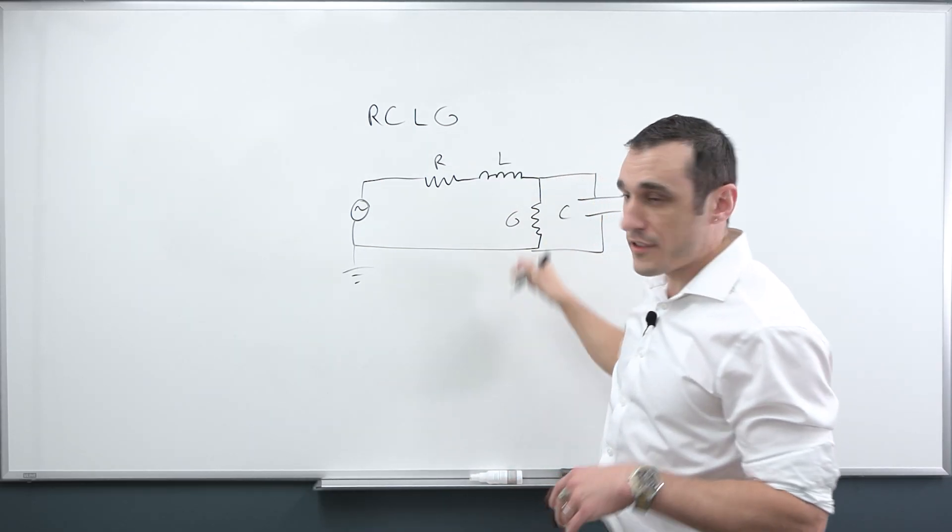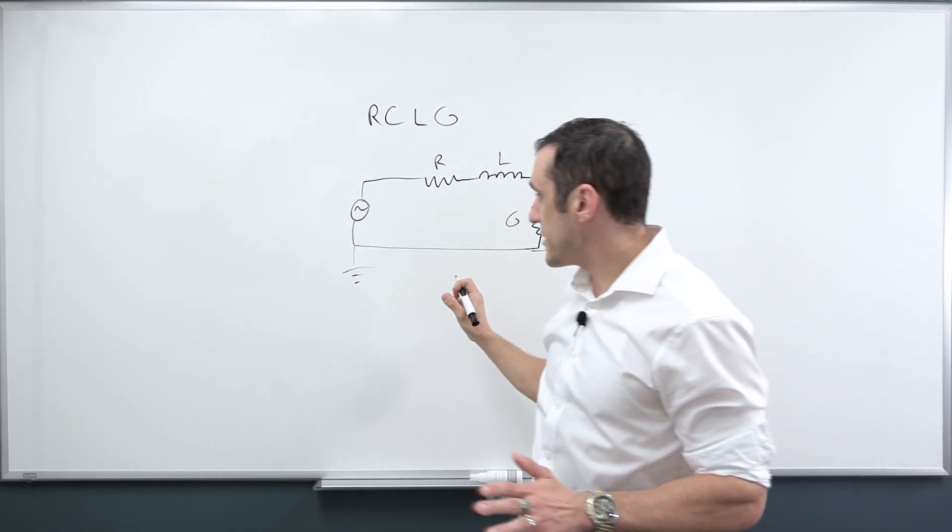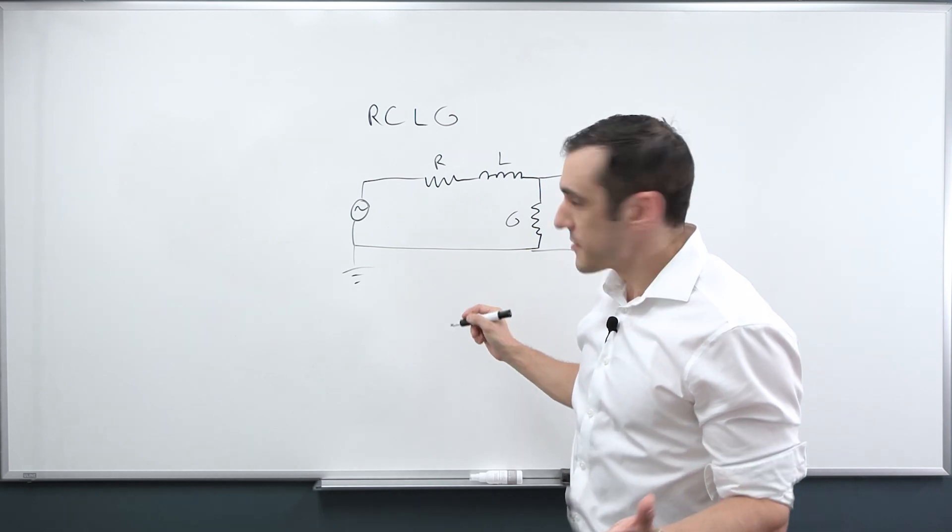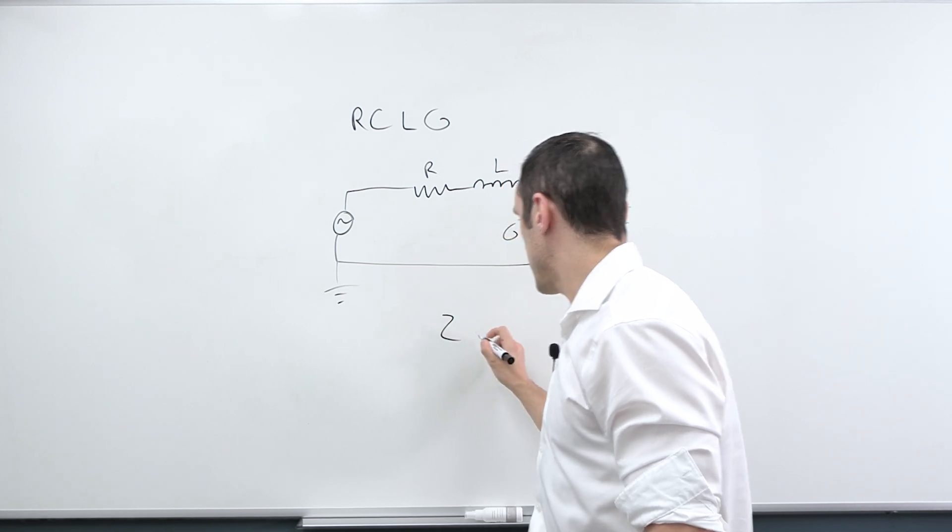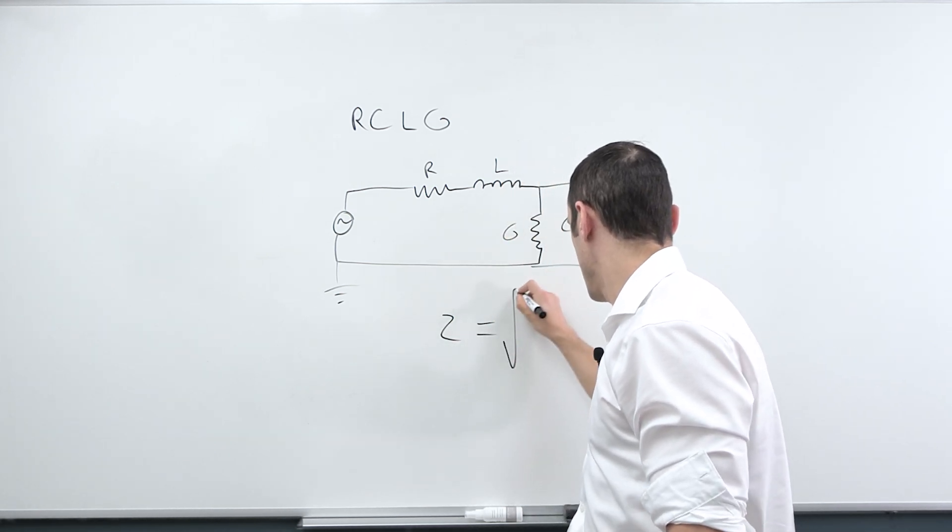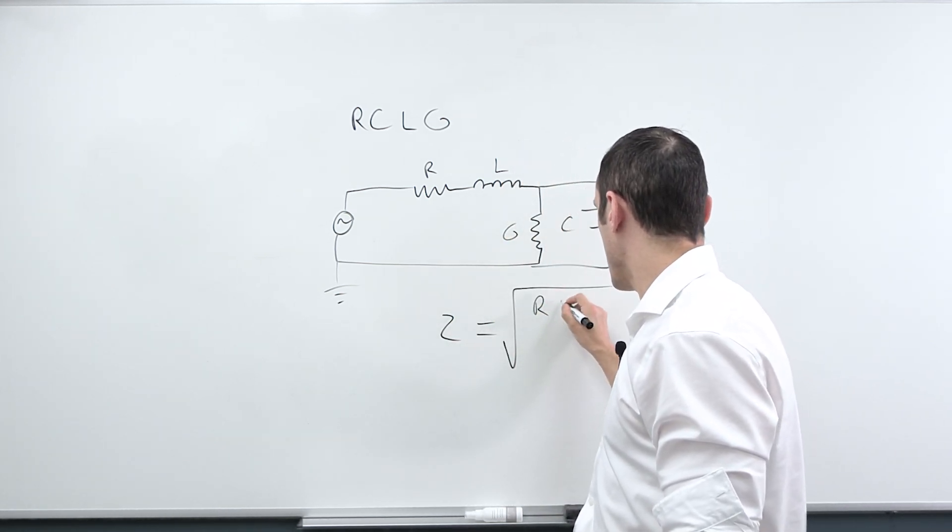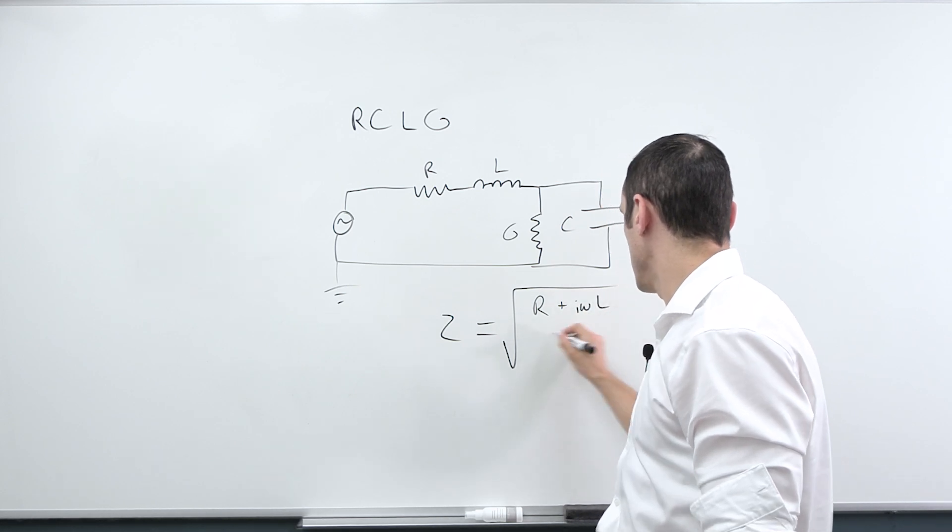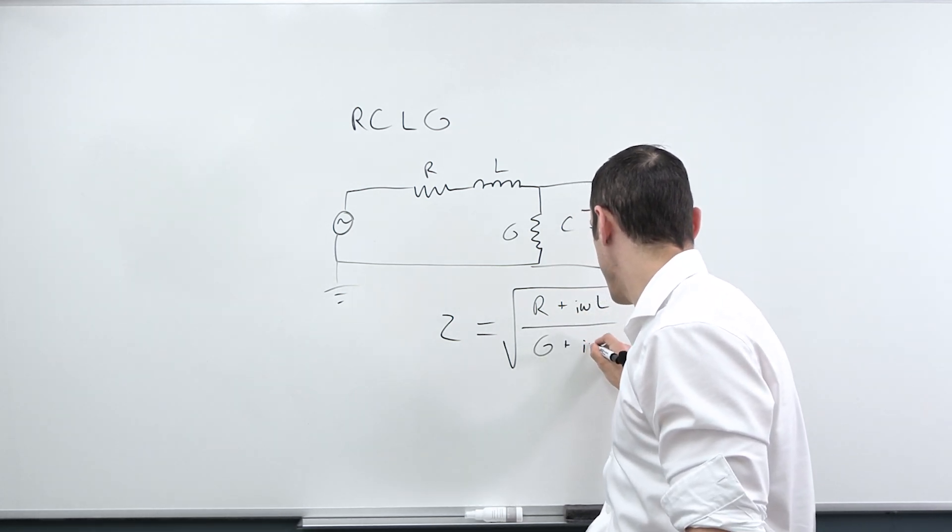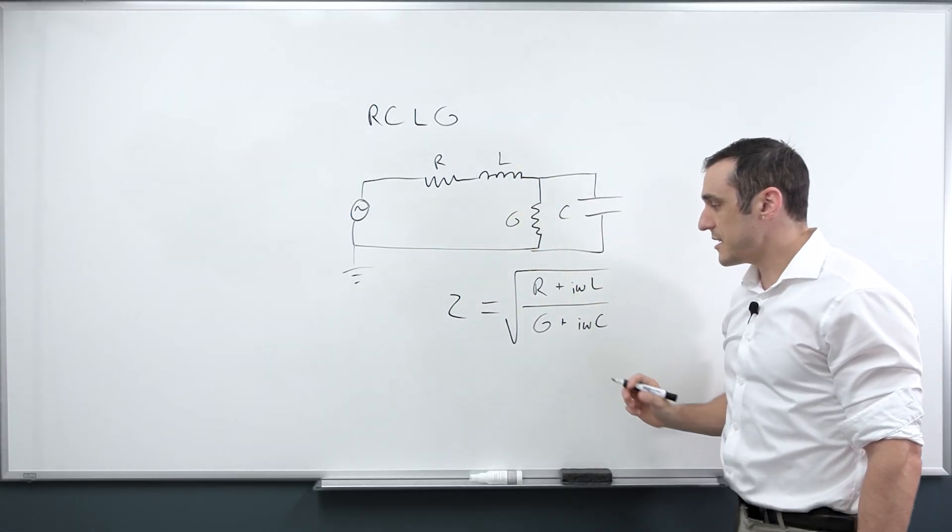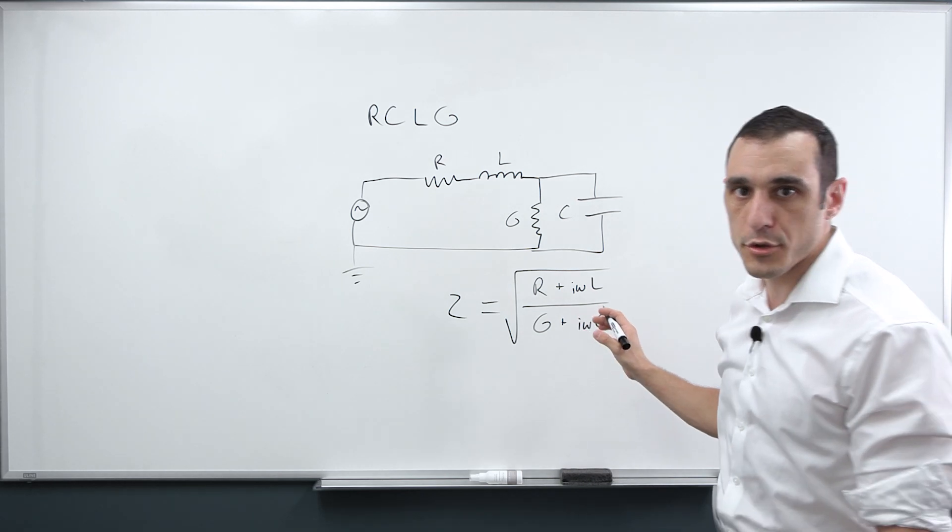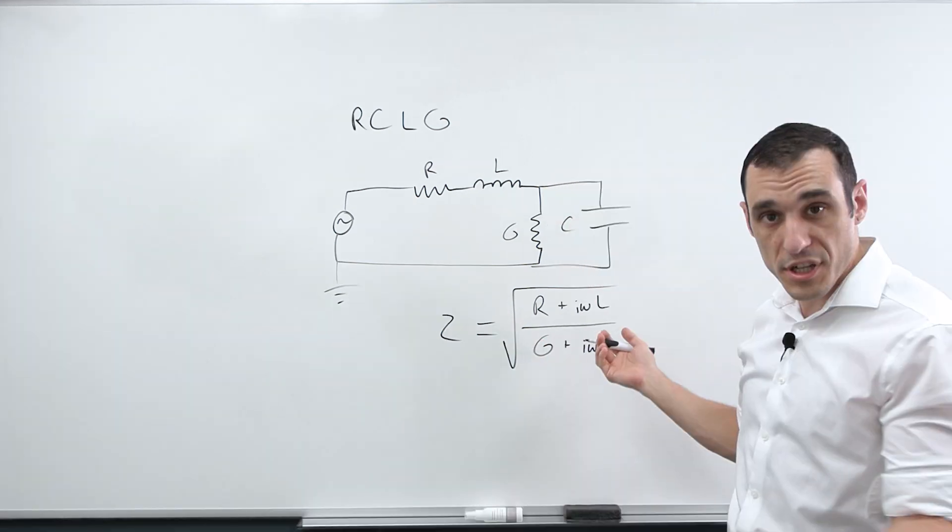Given that we have all of these different quantities in our PCB, how do we define a characteristic impedance? The characteristic impedance has a very simple equation. It is just Z equals square root R plus jωL divided by G plus jωC. So if you know each of these four quantities, then you can calculate the characteristic impedance of your transmission line. Pretty simple, right?